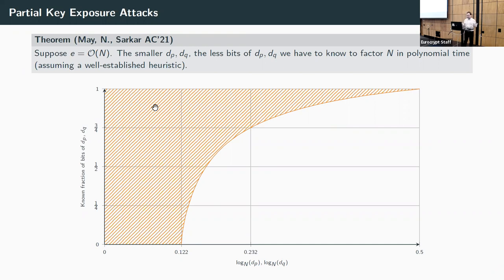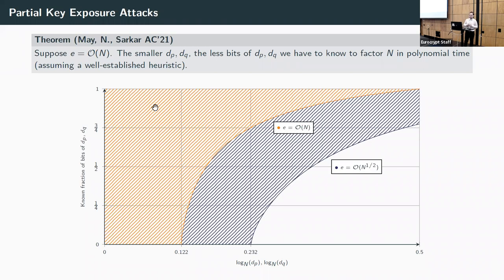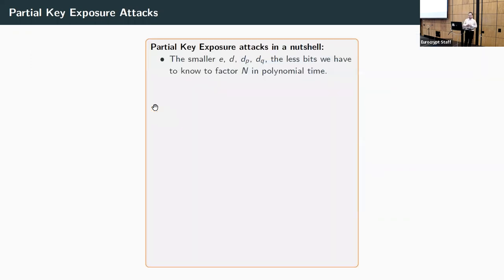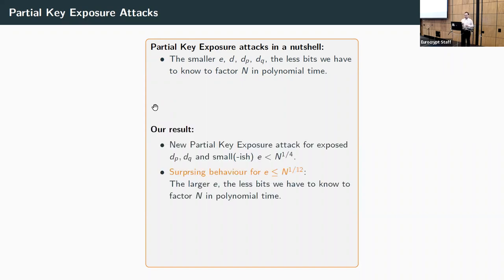With even stronger assumptions — say e is not larger than the square root of N — things get even better. For full-size CRT exponents you need only three-quarters of the bits, and you need no bits at all below the 0.232 threshold. In summary, partial key exposure attacks work better the smaller e, d, dp, and dq get — the fewer bits are needed to factor N in polynomial time.